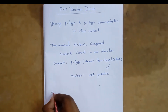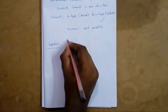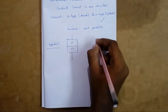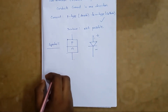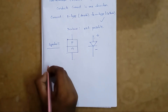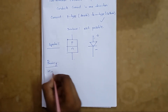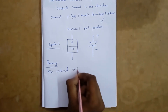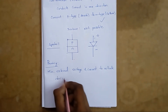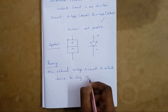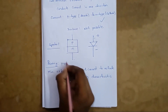Now we discuss the symbol for PN junction diode. To study its characteristics, we must provide minimum external voltage and current to activate the device. We must provide these things.